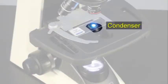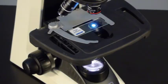The condenser is a small lens mounted on top of the iris diaphragm. It concentrates or condenses the light into a small, intense beam to shine through the slide.